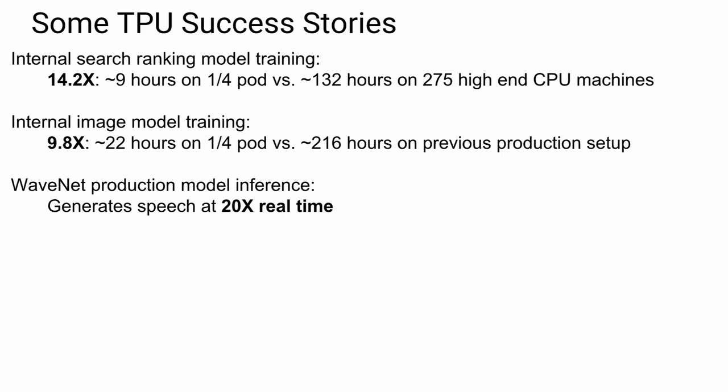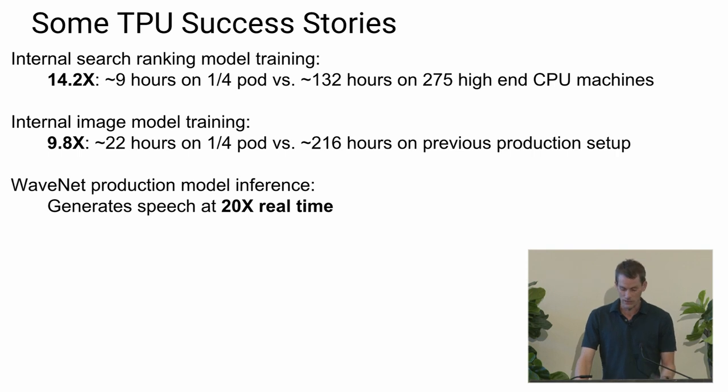We built these for our own internal use and are now exposing them as a cloud product. One of the first things we ran on this was our internal search ranking model training system, which previously used CPU-based machines and took 132 hours—now it runs in nine hours on a quarter pod. We got similar speed-ups for image models. We're using these in production for inference for WaveNet, DeepMind's text-to-speech system, to generate speech at 20x real-time, which actually makes that launch possible—it's a pretty computationally demanding model.